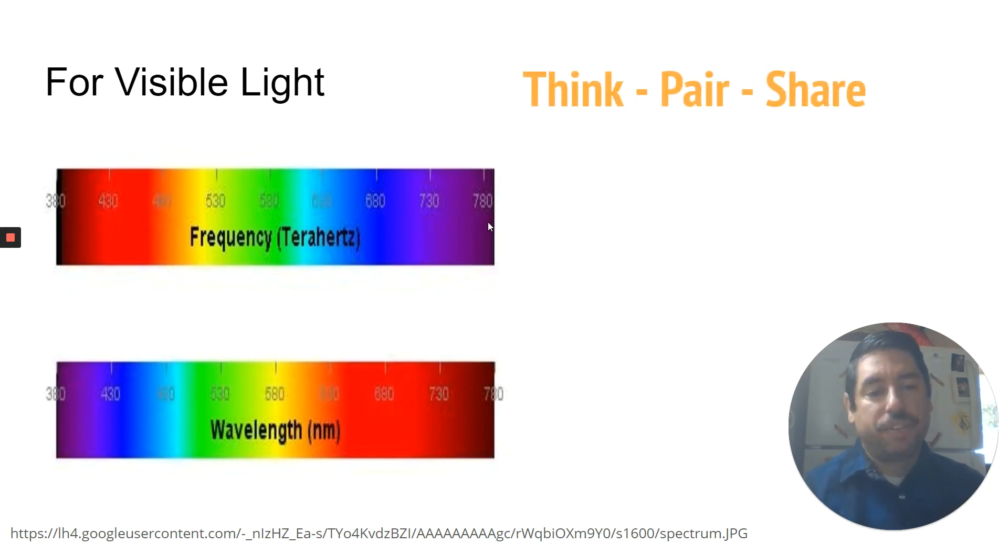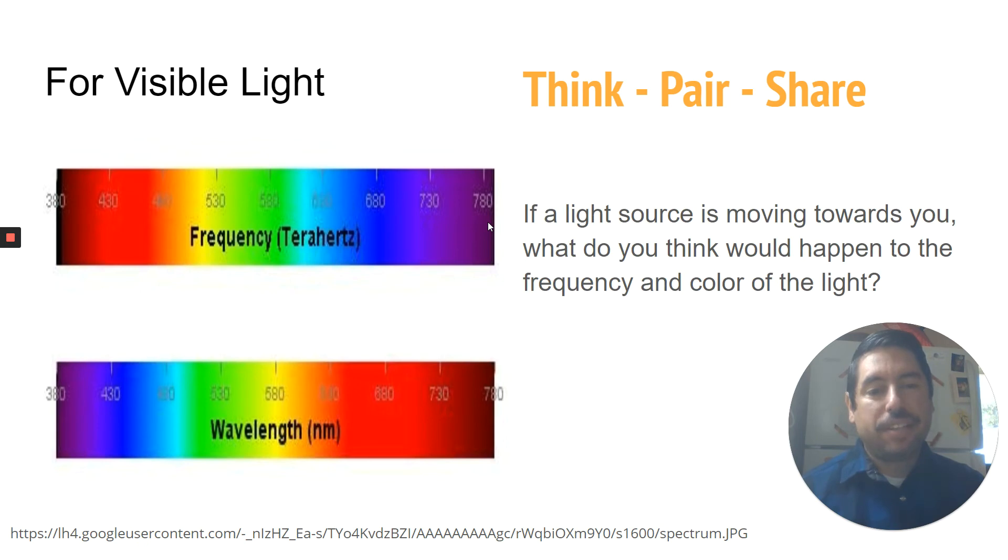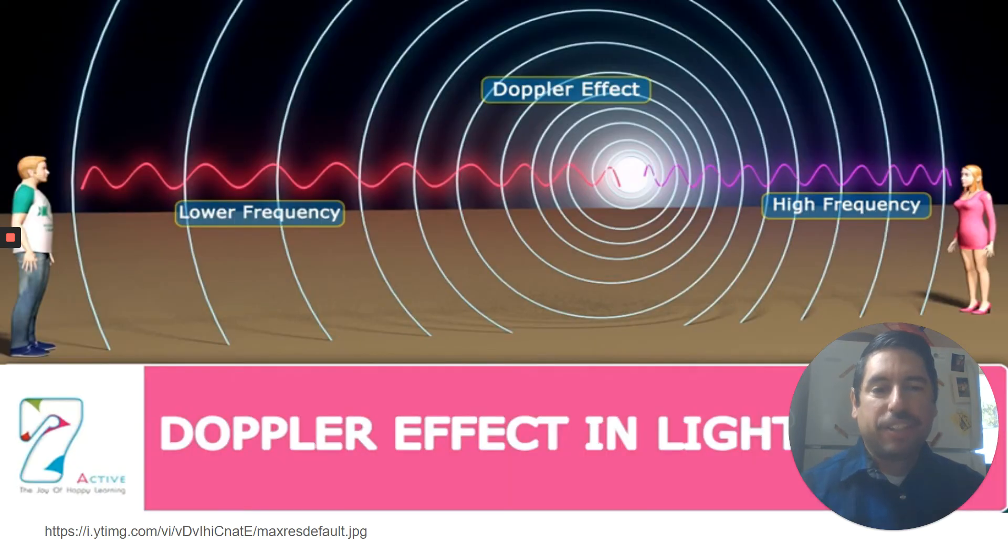So think about for a second, if the light source is moving towards you, what would happen to the frequency and the color of the light? So if you're standing still and the light is coming towards you, what's going to happen to the frequency of the light? And then what's going to happen to the color of the light?